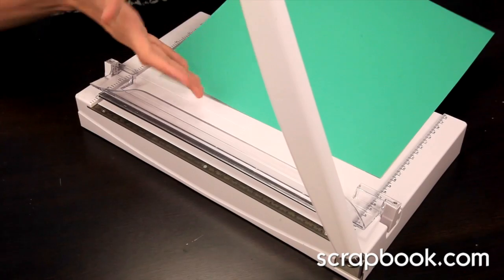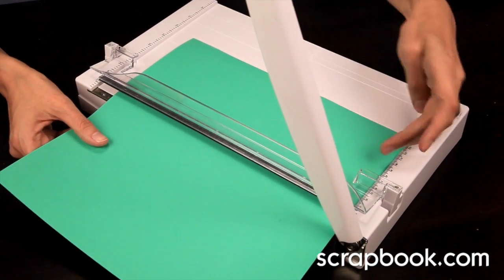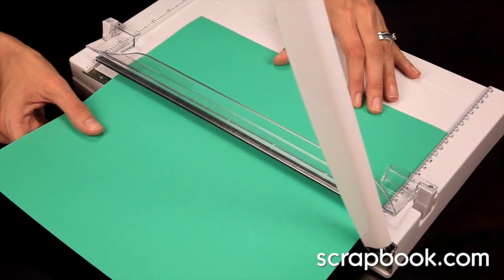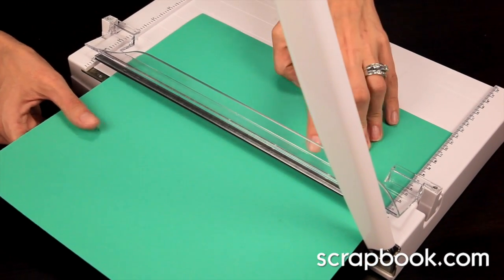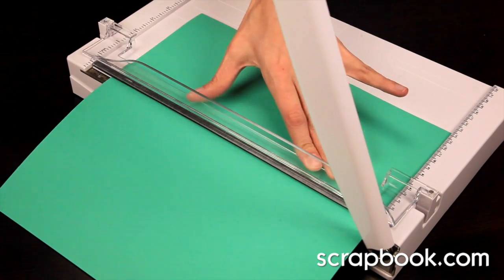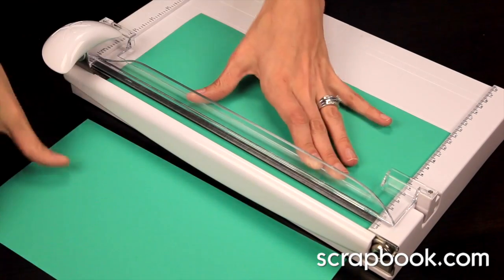Now to cut your chosen paper or card stock, slide the paper in and use either the ruler guides or the useful paper guides here, line it up, hold down on the finger protecting bar, and simply slice.